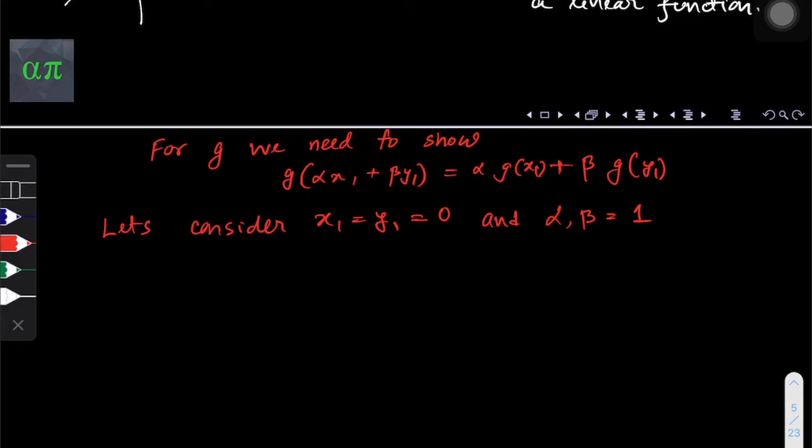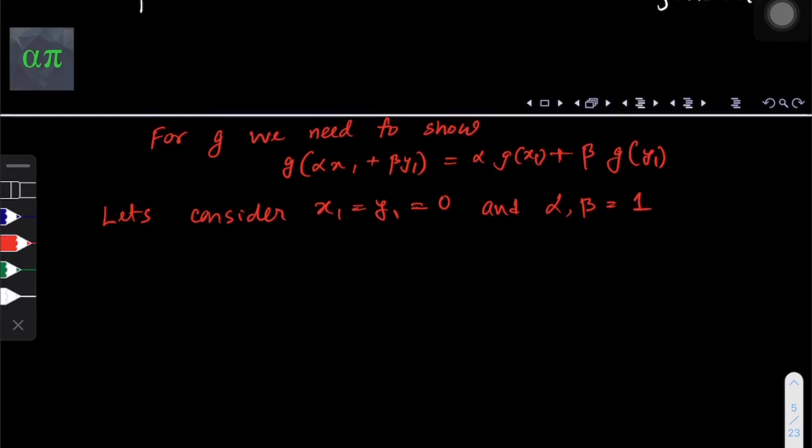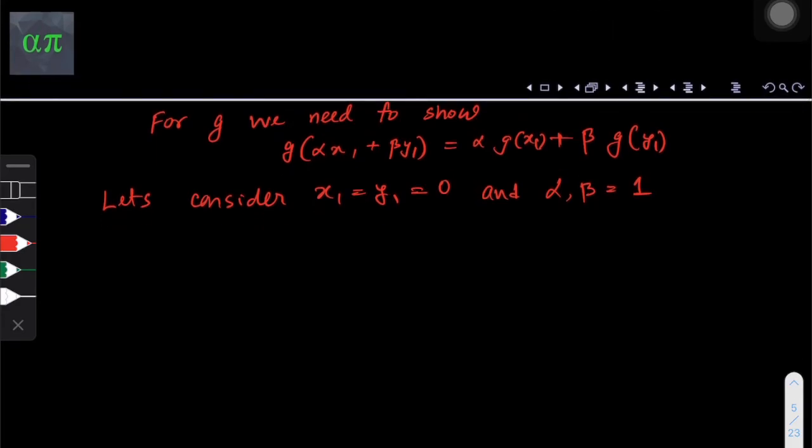I pick these values just for the simplicity of doing the math here. Then g of alpha x₁ plus beta y₁ is equal to basically g of 0 plus 0 because x₁ and y₁ are 0 according to our assumption here, which is g of 0, which is basically 0 plus 1 because if you remember we wrote g of x₁ is equals to x₁ plus 1.